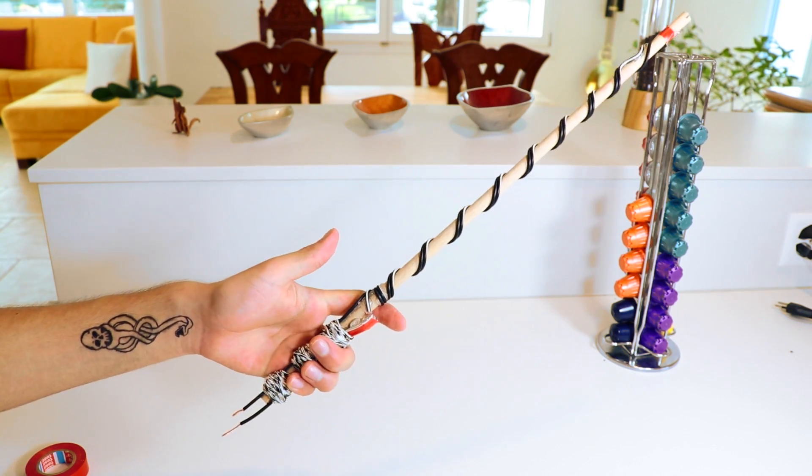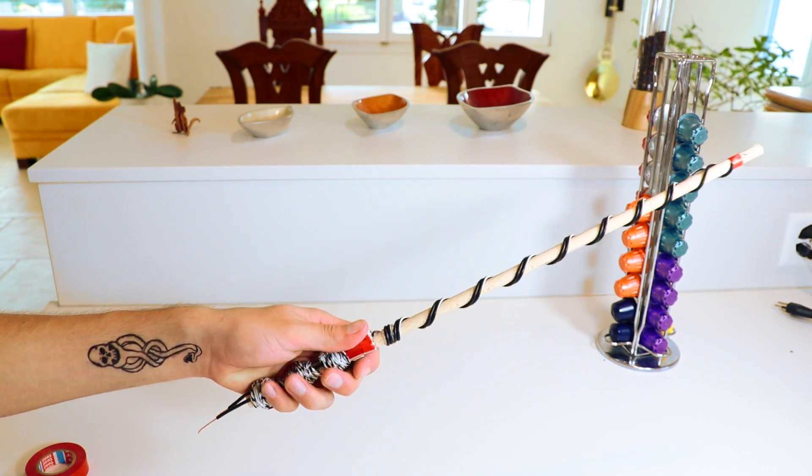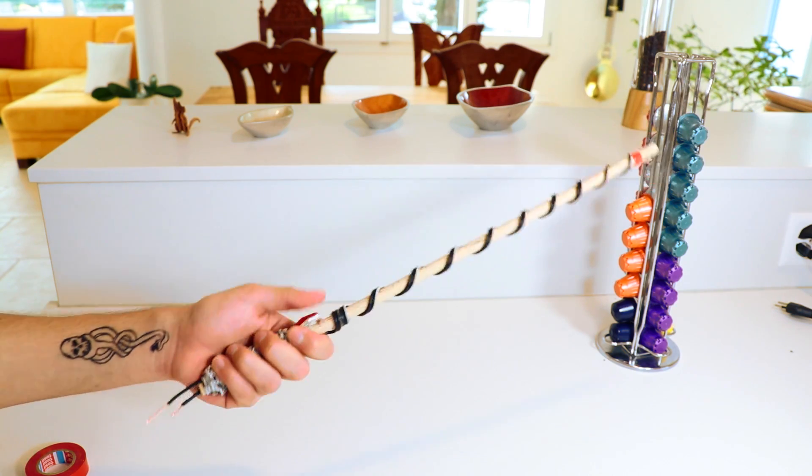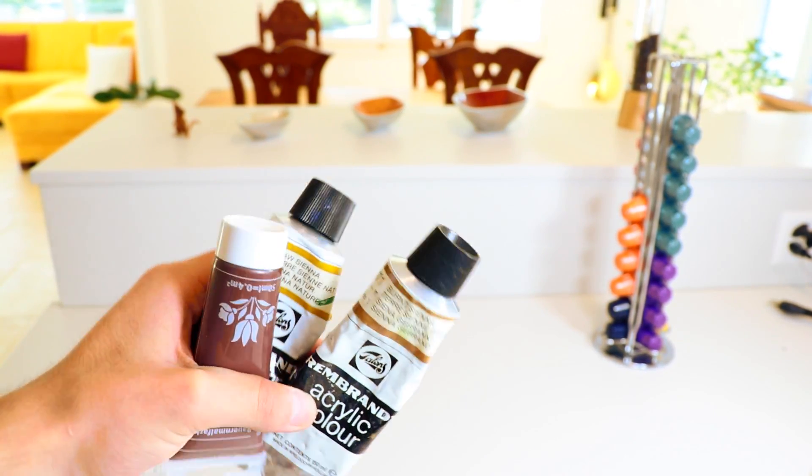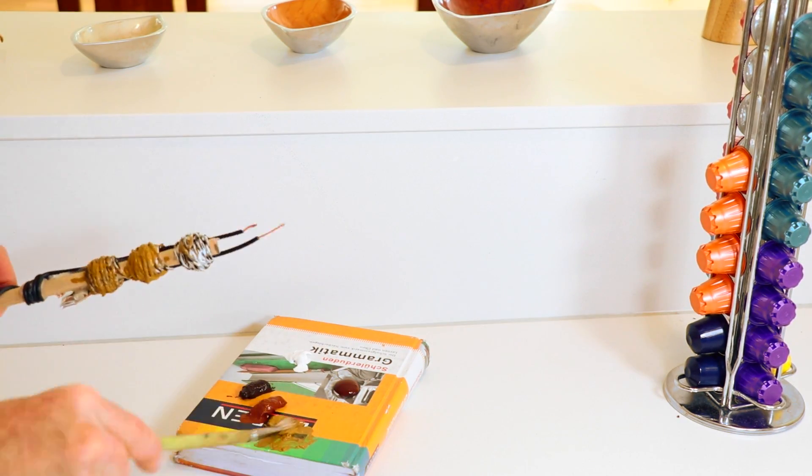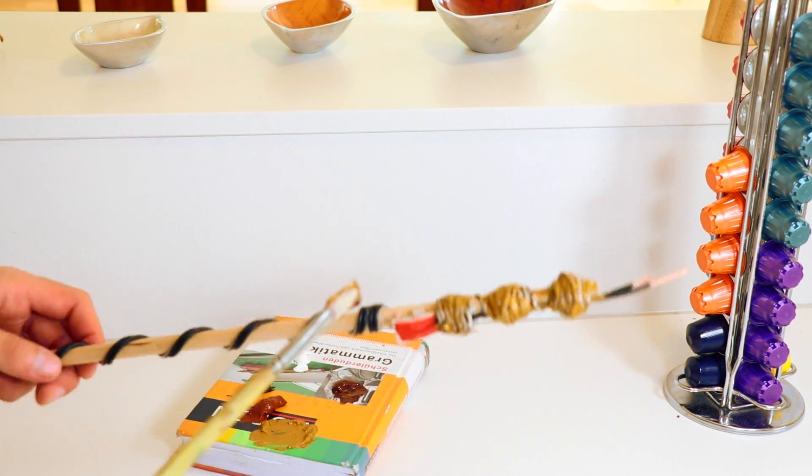Now your wand is pretty much done. It still doesn't really look like a wand so let's give it a paint job. Grab some paints. I'm using some acrylic paint. Then let your imagination take over and personalize your wand however you like.